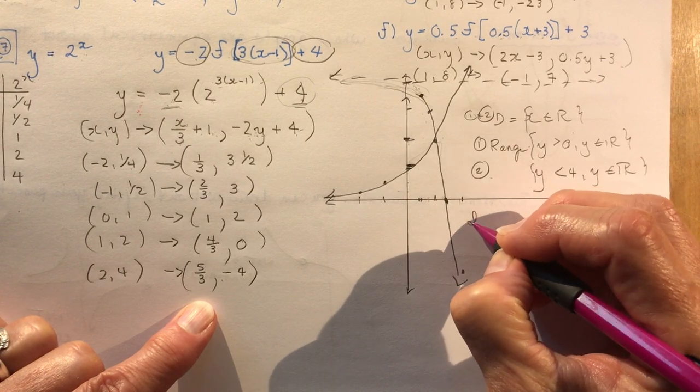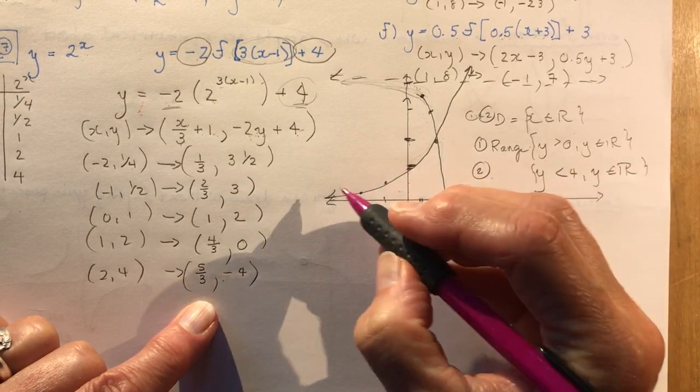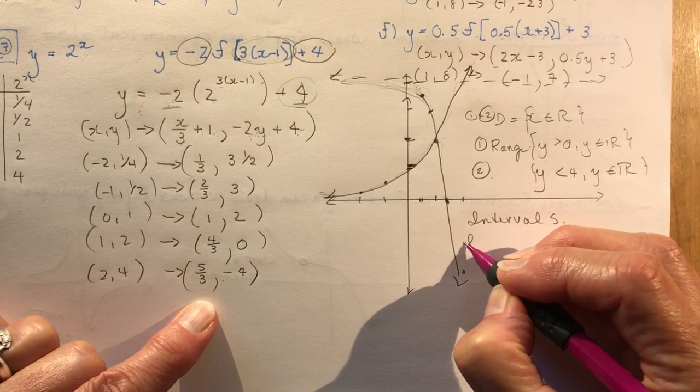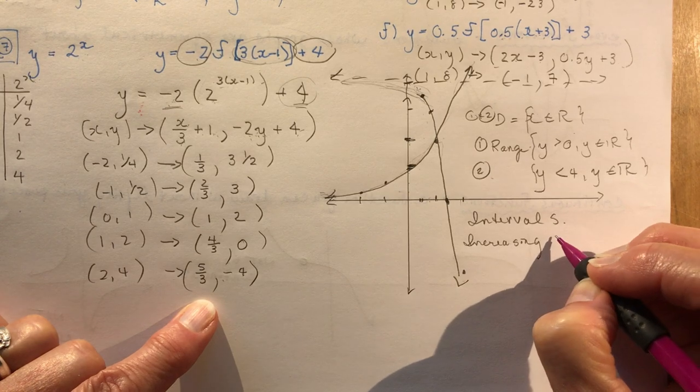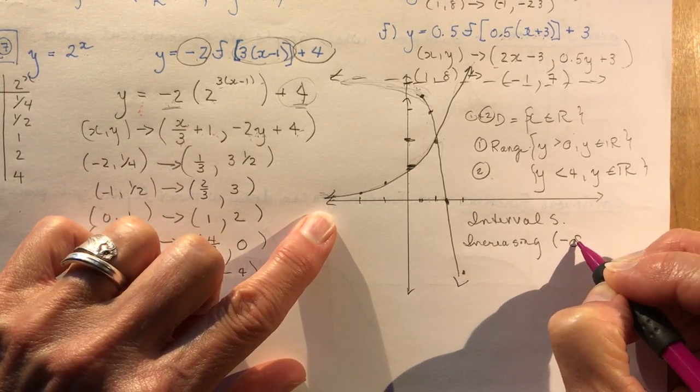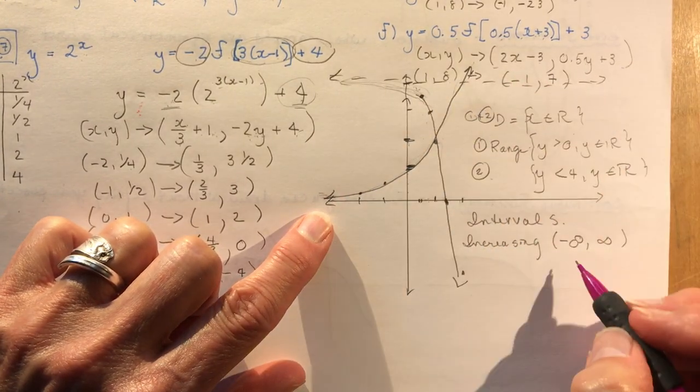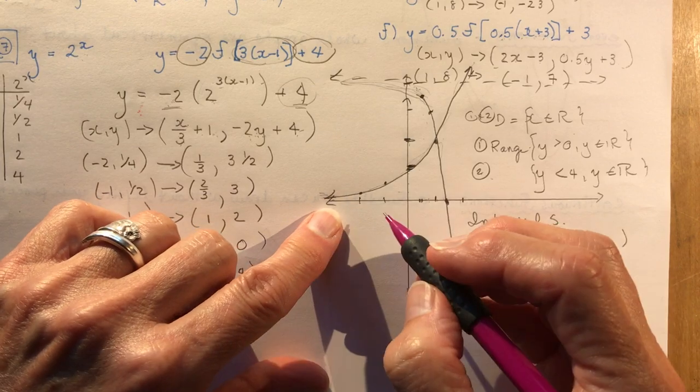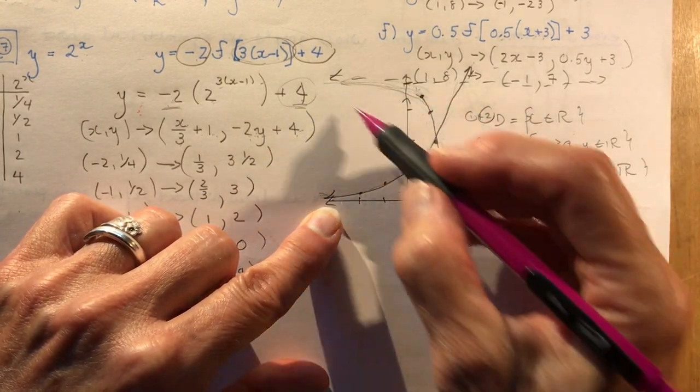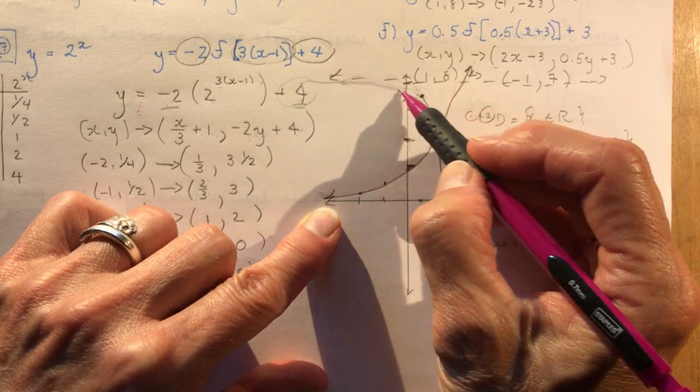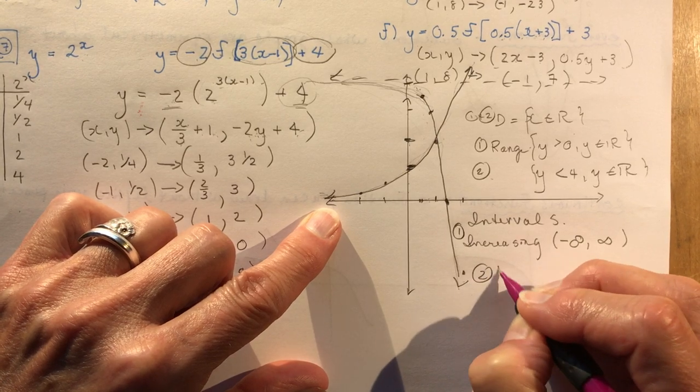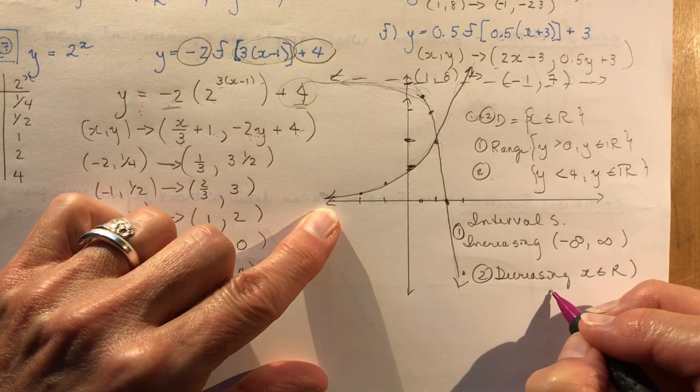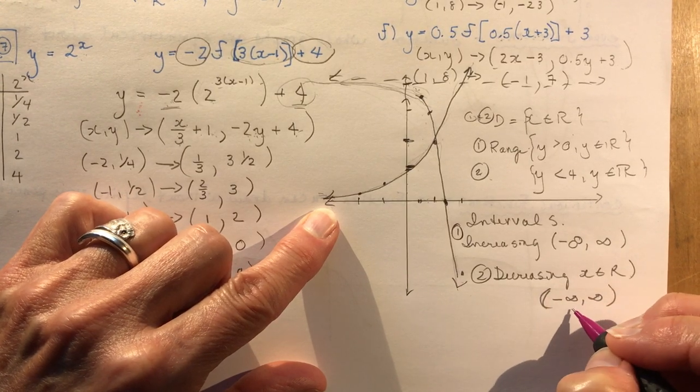Intervals. So on our first graph, it's continually increasing. Remember, you're going from left to right. So I'm going to write increasing between. Now remember the intervals, we're going to use round brackets because it's going to be negative infinity to infinity. It's increasing for all values of x. Or you could say increasing for x is an element of real numbers. And the second graph, the second graph is going to be decreasing for all values of x. See, as I come from this side and I go down, it's always decreasing. So your first graph is always increasing. The second graph is decreasing for x is an element of real numbers. Or if you use interval notation, you would say negative infinity to infinity round brackets because we don't include infinity.